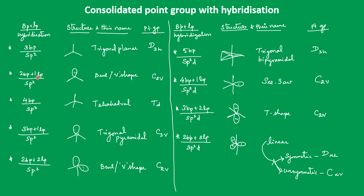If one lone pair of electrons is there, what will be the structure? The base structure will be trigonal planar — SP2 means the base structure is trigonal planar. If one lone pair is there, just change the structure by adding a lone pair and it becomes a bent shape, also called V shape. Whenever you get a bent or V shape, the point group is C2V.